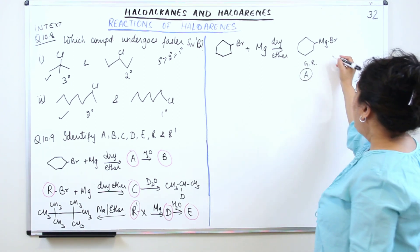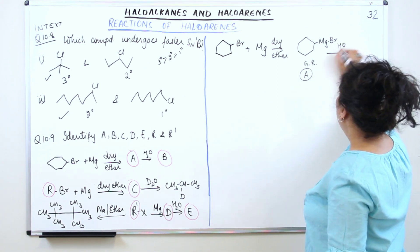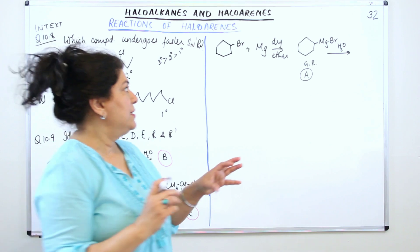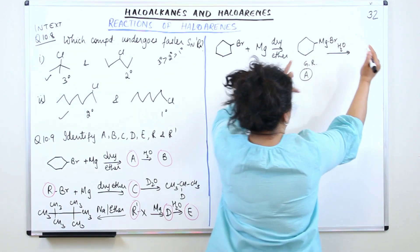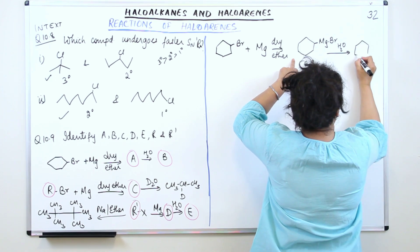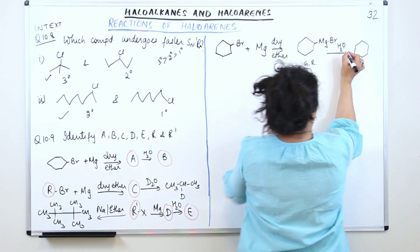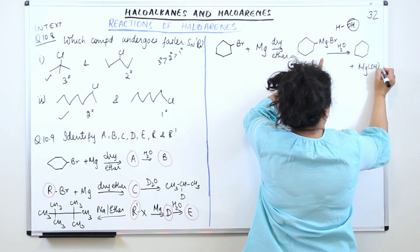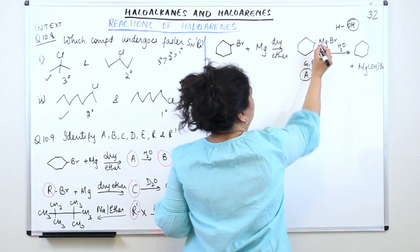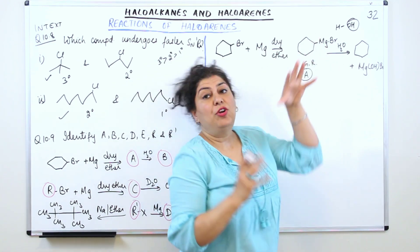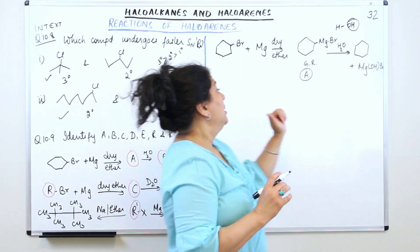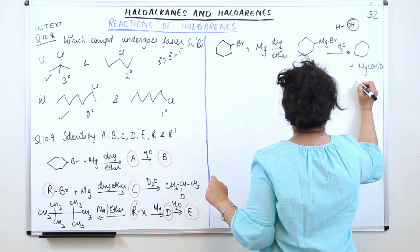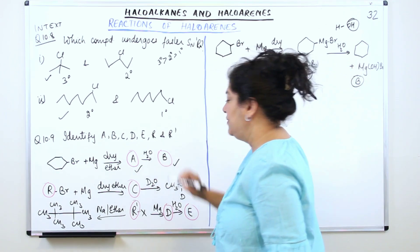When you make this react with water, you get B. Whenever you carry out the hydrolysis of the Grignard reagent, MgOHBr gets separated and you get the cyclohexane back. The Mg combines with OH from water to form MgOHBr, and the hydrogen attaches itself where magnesium leaves, regenerating cyclohexane. So compound B is cyclohexane.